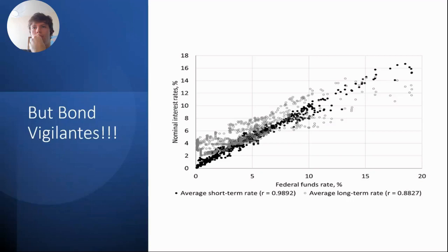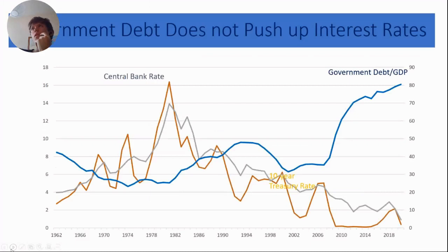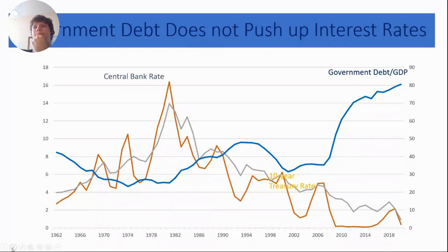Looking at the correlation between the fed funds rate — our central bank's target interest rate — and both short-term and long-term rates: the correlation on short-term rates is nearly 100%, and with long-term rates almost 90%. There is really only one bond vigilante in sovereign currency nations and that is its own central bank. If you want low rates, all you have to do is have your central bank adopt a low interest rate policy. Government debt does not push up interest rates — in fact, over recent decades the correlation runs in the opposite direction: as the US debt-to-GDP ratio has risen, interest rates have been coming down.